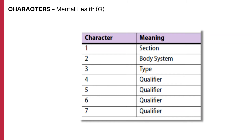The fourth character is the type qualifier and further specifies the root type. The fifth, sixth, and seventh characters are not specified in this section and are assigned the value Z, or none.